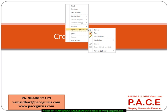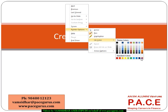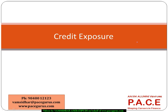There are many terms associated with credit exposure — expected exposures, effective expected exposures, positive expected exposure, expected negative exposure, and potential future exposure. We will look at how to measure credit exposure for different kinds of positions, right from bonds to options to swaps.